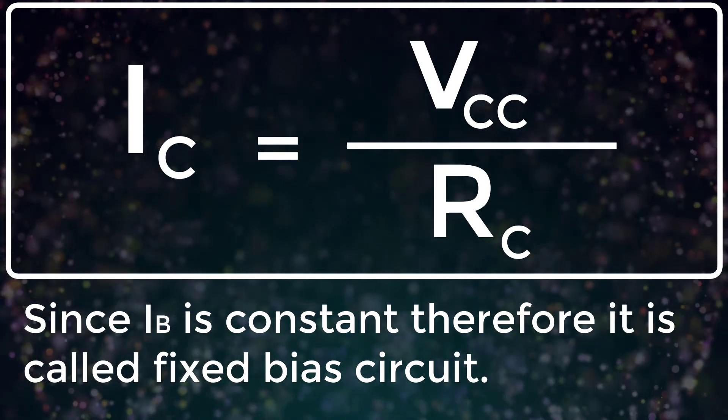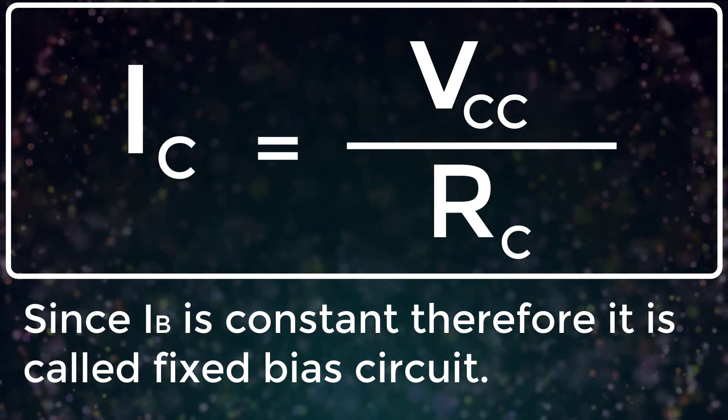Since IB is constant, therefore it is called fixed bias circuit.